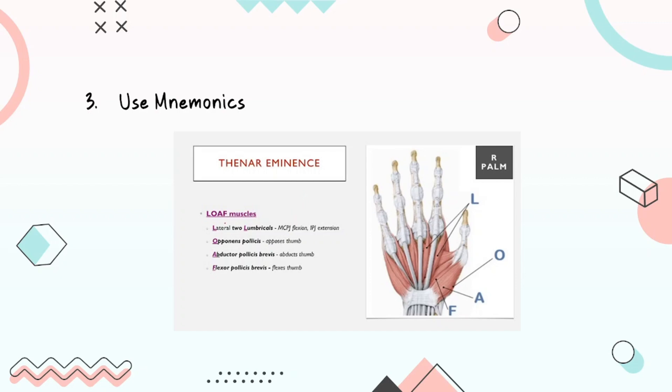The LOAF muscles are the lateral two lumbricals, the opponens pollicis, the abductor pollicis brevis, and the flexor pollicis brevis. So just remembering LOAF is a good way to remember all of these muscles.